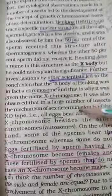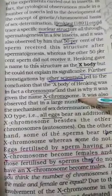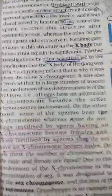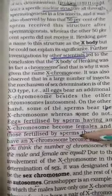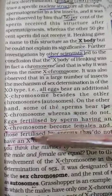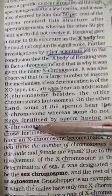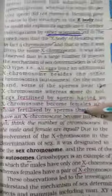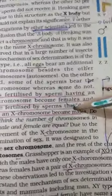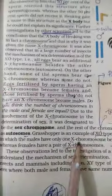Other scientists also observed chromosomal behavior during sex determination. In some insects like Gryllus, an XO type of sex determination was found. Females have XX chromosomes, but males have one less X chromosome, so in Gryllus this XO type of sex determination is present, which will be shown in the notes.